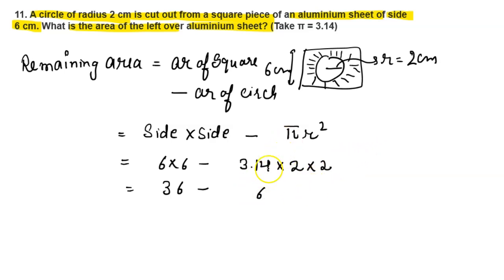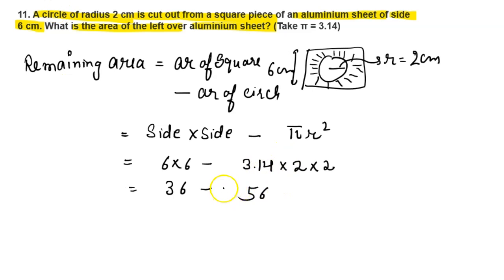3.14 times 4 is 12.56, and the final area is 23.44 centimeter squared. So this is your answer for this question.